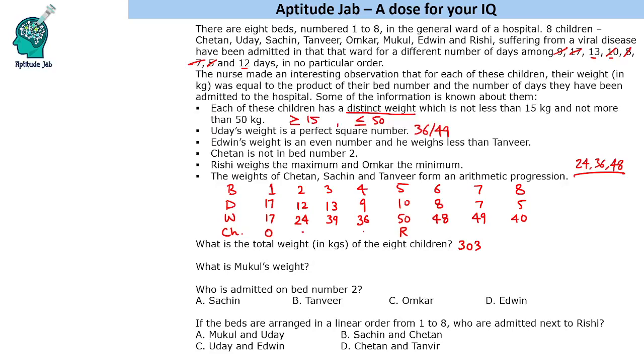So these three we will reserve for these. These three weights will be reserved for Chetan, Sachin and Tanvir. Okay, now we were saying that Uday's weight is a perfect square. So it cannot be 36. Uday's weight will be 49. Okay, now Uday is also done.